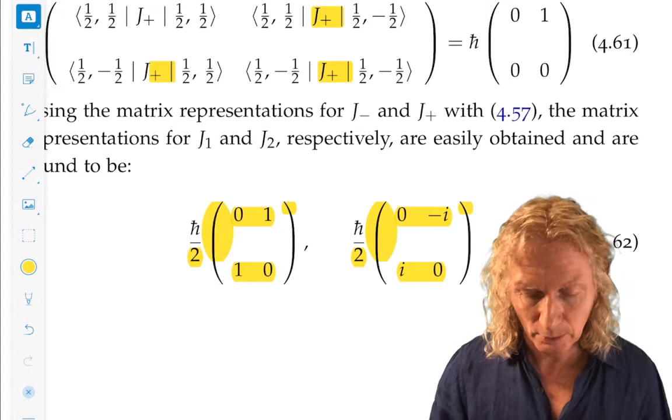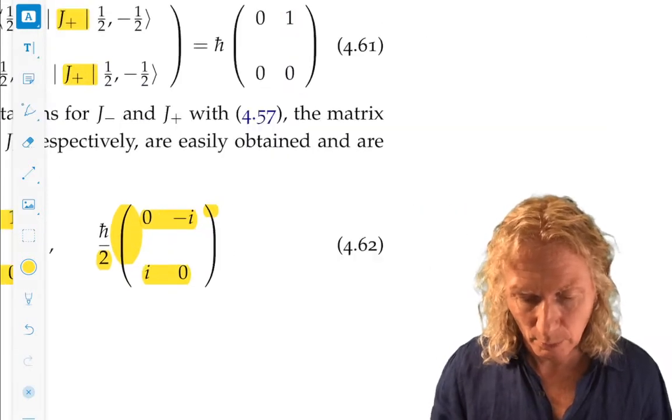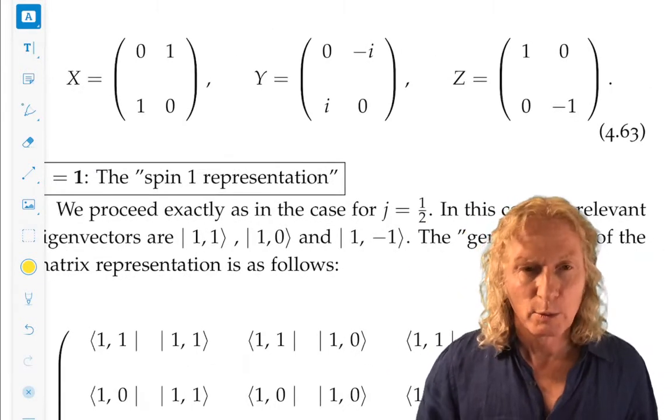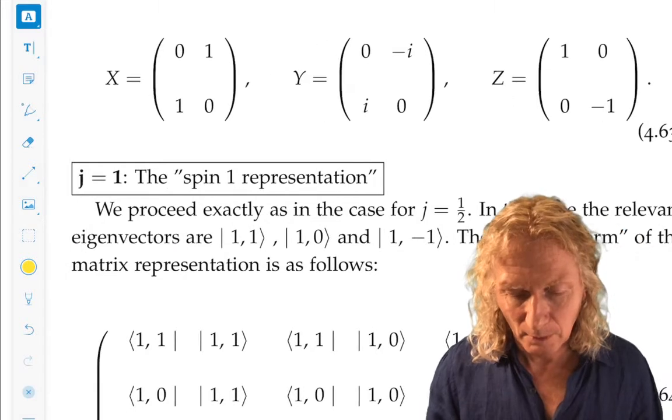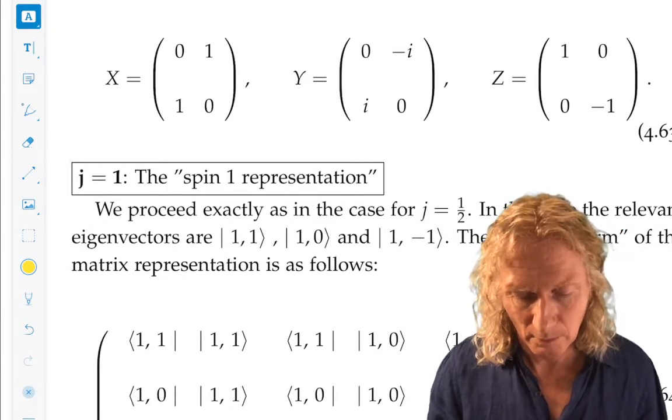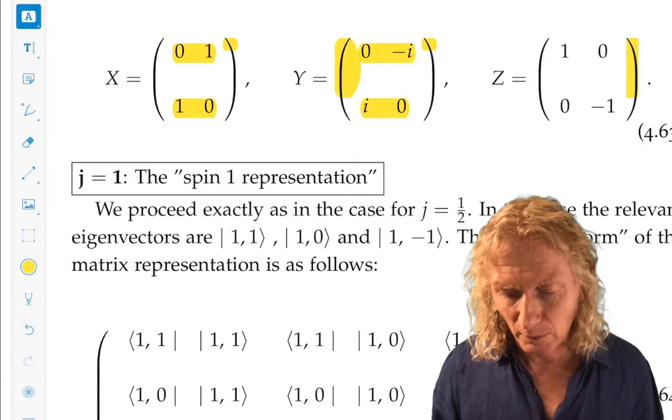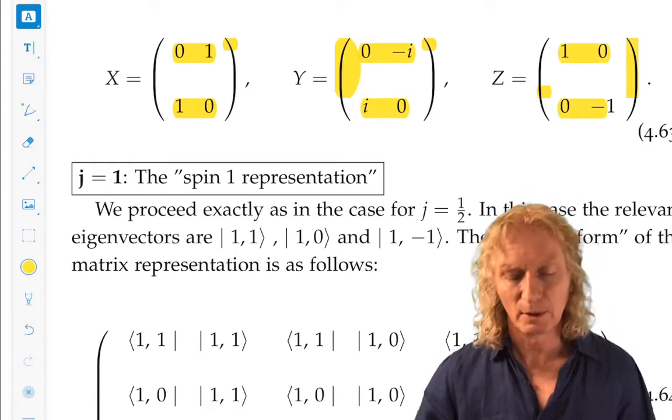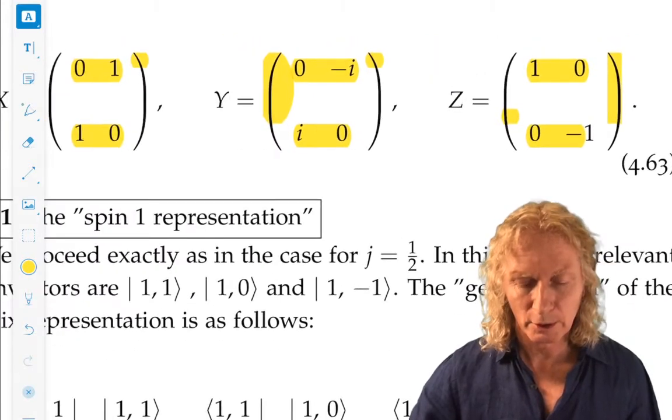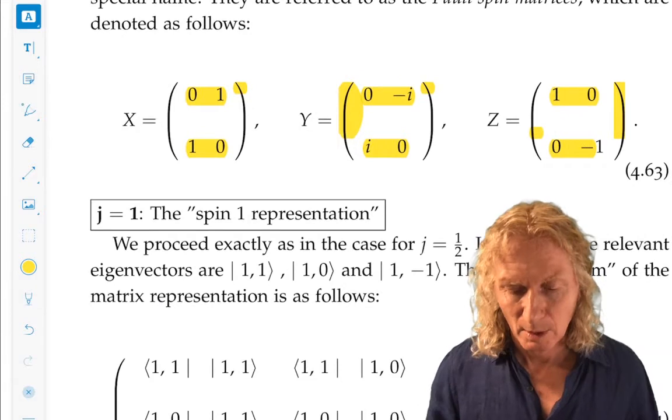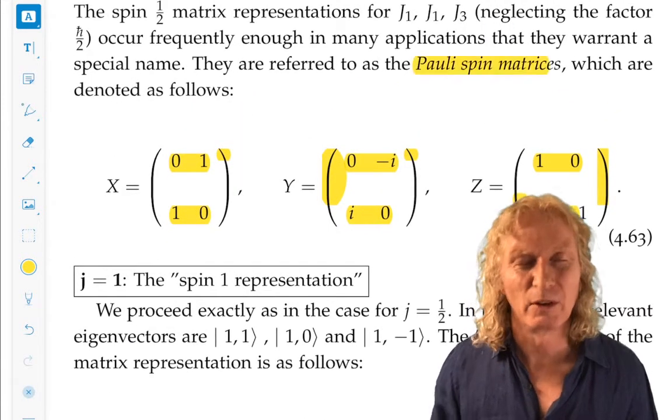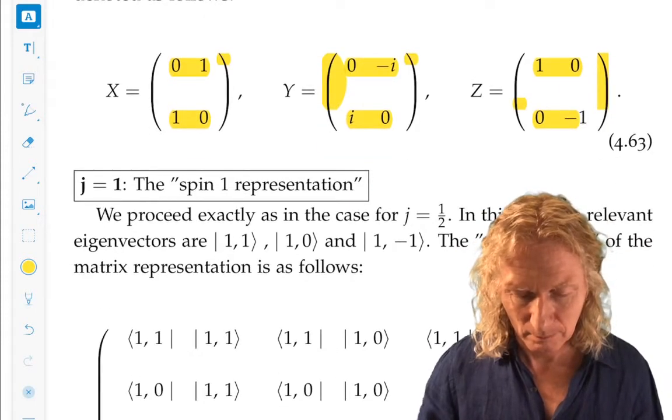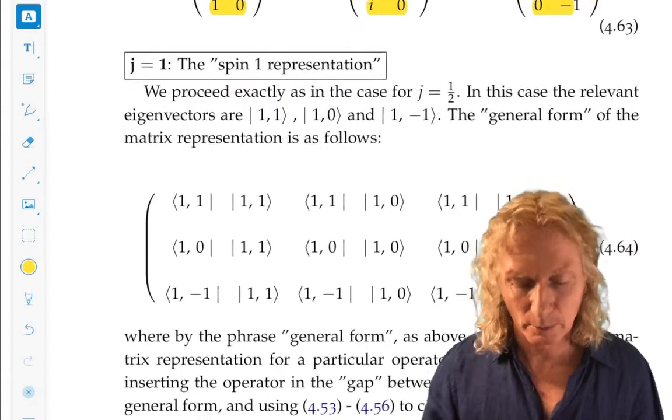Now, if we ignore the factor out in front of h bar over 2, in each case we get h bar over 2 times these three matrices. And these three matrices are very famous. This is the first one we looked at, j3. We call them uppercase X, uppercase Y, and uppercase Z. That's a traditional terminology. These are the famous Pauli spin matrices. Remember I said this was a spin-a-half representation for some reason? Okay, those calculations are pretty straightforward.